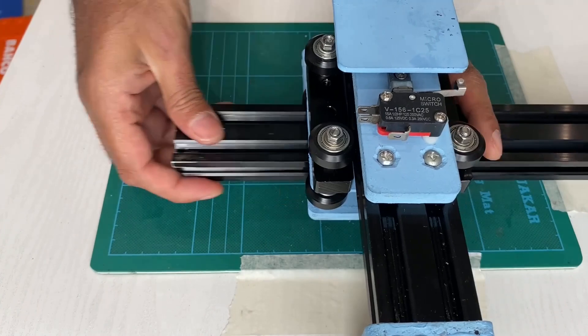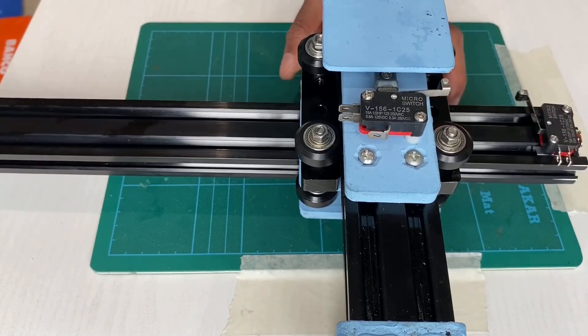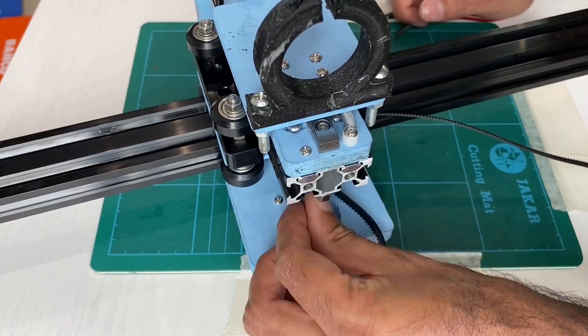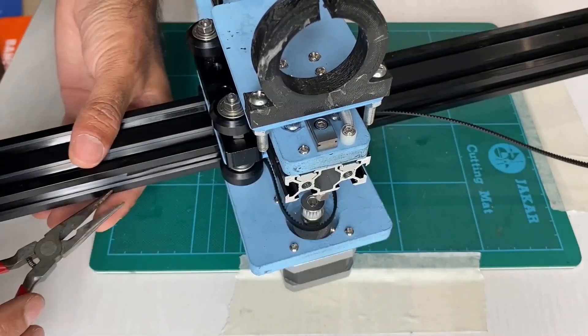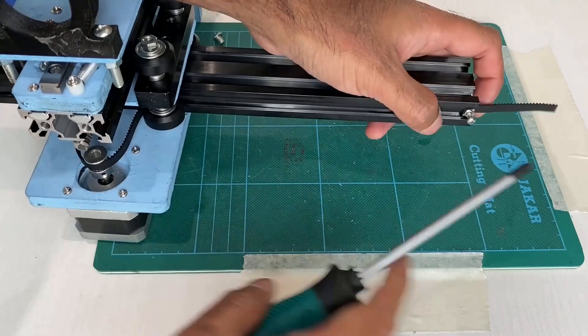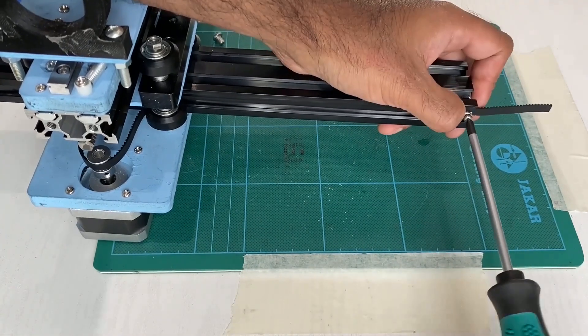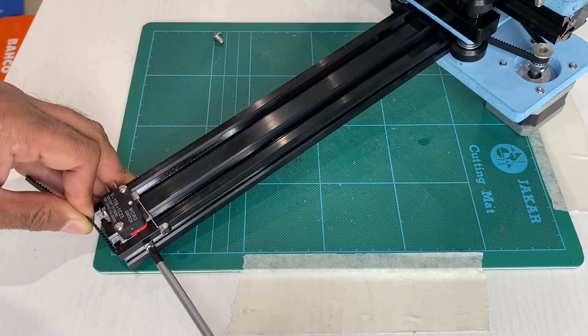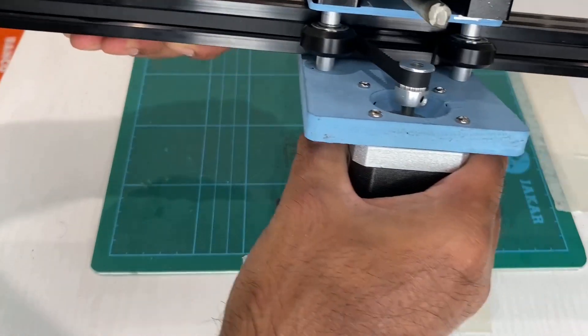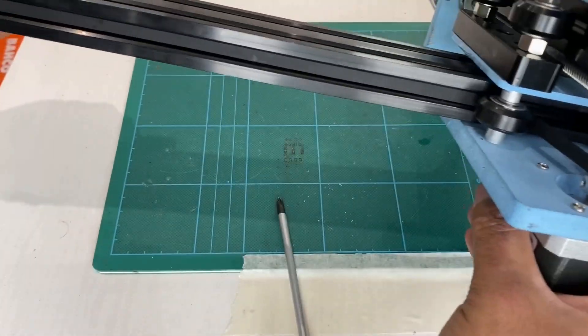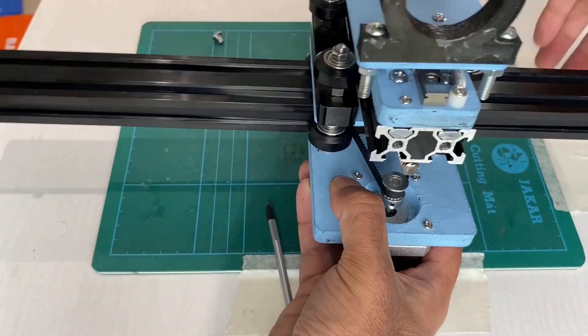And that's the X-axis being slid through with the homing switch at the end. Adding the belts is the final part of this sub-assembly. They get threaded over the motor and under the wheels and fastened in with some T-nuts. And the X-Z sub-assembly is good to go.